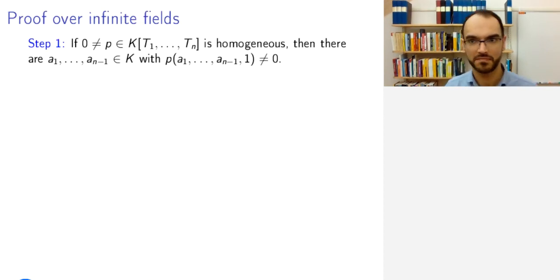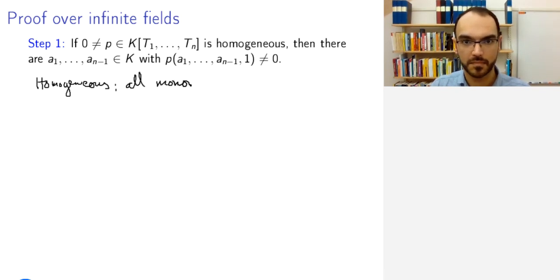Let's now prove the Noether normalization theorem. This will be done in three steps. The first step is the following. If you are given a homogeneous polynomial in n variables, non-zero, that all monomials have the same total degree.